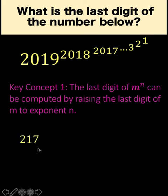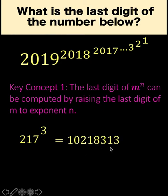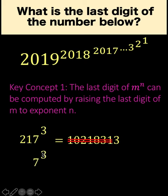For example, if our m is 217 and we raise this to exponent 3, the result is 10,218,313. But since we are only interested with the last digit of this exponential number when evaluated, we do not want all these other digits except the number 3. Computing for these other digits would be a waste of time. Notice that if instead of raising 217 to the third, we just take the last digit 7 and raise it to the same exponent 3, the result is 343. Notice that their last digits are both equal to 3. That is what we mean by this key concept.